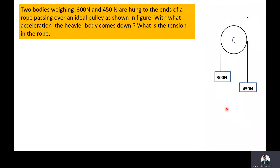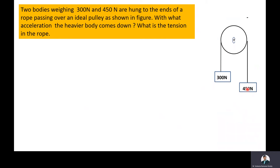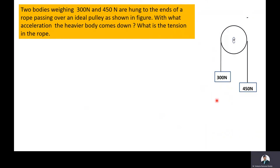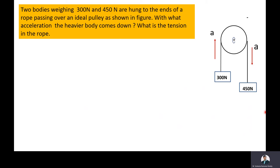Two bodies of weights 300N and 450N are connected to the two ends of a rope, and this rope is passing over an ideal pulley. Because of the heavy weight, the 450N body comes down whereas the 300N body moves up — that is, the acceleration of the 300N body is in the upward direction, whereas the 450N body's acceleration is in the downward direction. Our objective is to find the value of acceleration A as well as the tension in the rope T.